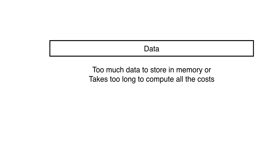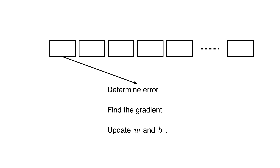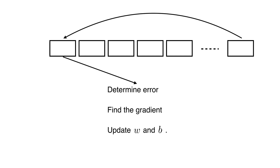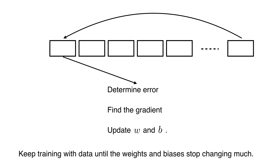There's a problem: we often have way too much data to store in memory, or it takes too long to compute all the costs to perform gradient descent. So we chunk up our data into blocks called mini-batches. For each batch, we determine the error, find the gradient, and update the parameters. Then we use the next batch, determine the error, find the gradient, and update the parameters using gradient descent — and so on through all the mini-batches. We start again at the first batch and keep going until the weights and biases stop changing much.